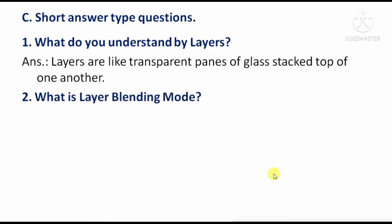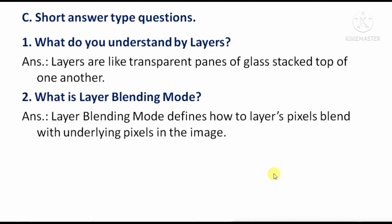Next question: What is layer blending mode? Answer: Layer blending mode defines how two layers' pixels blend with the underlying pixels in the image — means, layer blending mode determines how a layer's pixels mix with the pixels of the image below it.